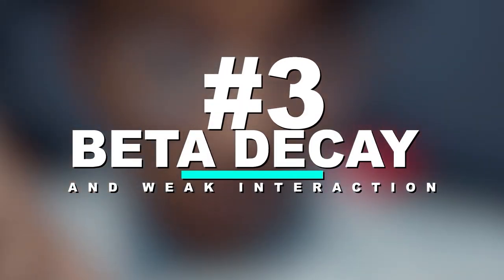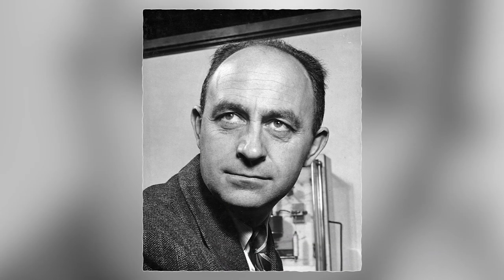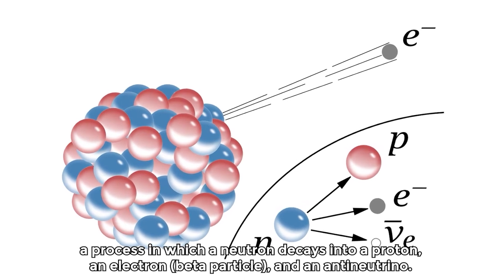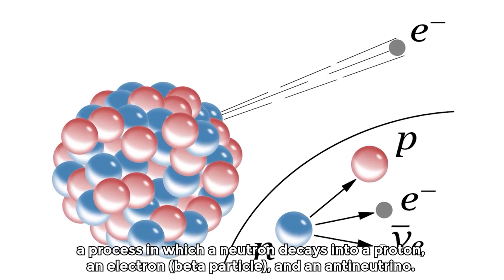Beta decay and weak interaction. Fermi's expertise in theoretical physics extended to the study of beta decay, a process in which a neutron decays into a proton, an electron (beta particle), and an anti-neutrino.